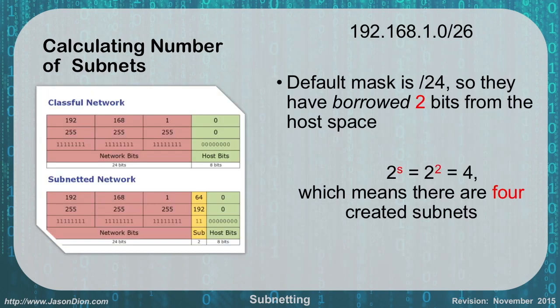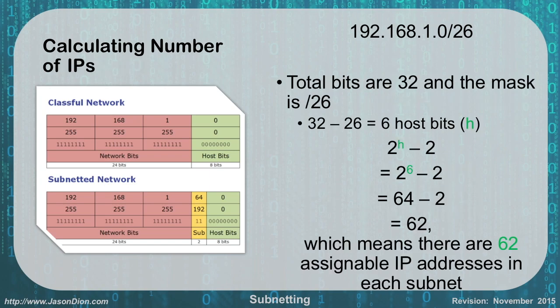For a slash 26 example — a class C address with a default of slash 24 — we calculate: 26 minus 24 equals 2 borrowed bits, so 2 to the 2nd equals 4 networks. For the number of IPs: 32 total bits minus 26 gives 6 host bits. 2 to the 6th minus 2 equals 64 minus 2, or 62 assignable host IPs per subnet, plus the network and broadcast addresses. This gives us 62 usable IPs per subnet — a much more manageable size than the original 256.